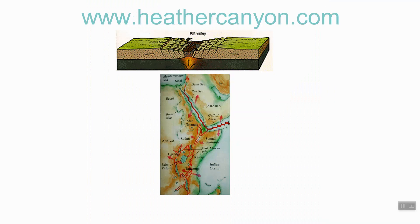The Basin and Range Province formed as rift valleys. About 30 million years ago the western part of the United States started to separate, and California started to break off away from the rest of the country. As it did this, magma from below the continent was rising up and pushing the crust apart, forming these rift valleys. So the continent got stretched and broken, and the area in between got thinned and formed valleys, with mountain ranges on the sides.